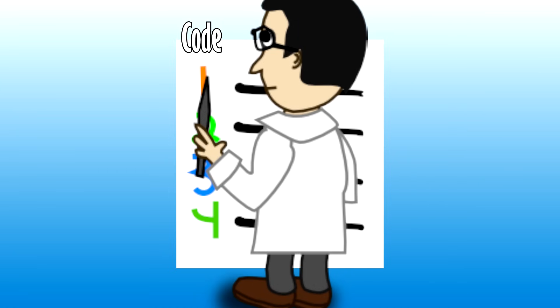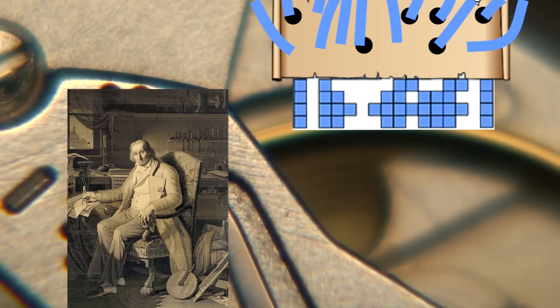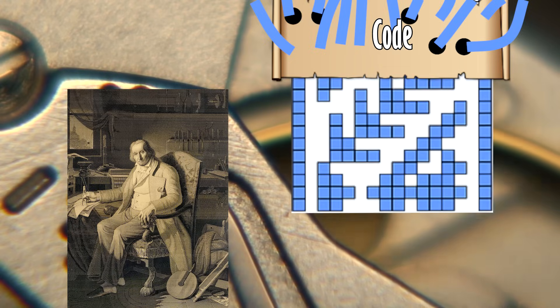To understand that communication and how this process even started, you have to go back to the Industrial Revolution where the first computer program was invented in 1801 by a guy named Joseph Jacquard. He developed a system of weaving instructions, or code, for his sewing looms that could be stored on cards with holes.